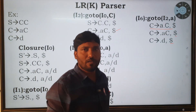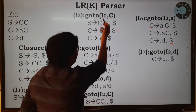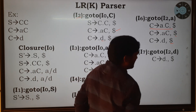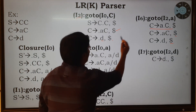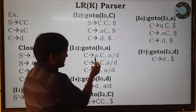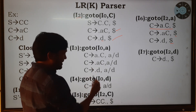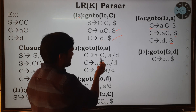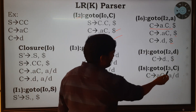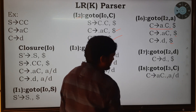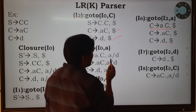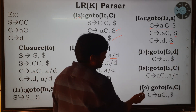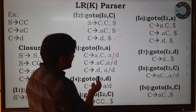Apply goto(i2, d): shift the dot to give C → d• with input string dollar. i2 is now complete. Come to i3: there is C, a, and d. Apply goto(i3, C): shift the dot to give C → aC• with input strings a or d.